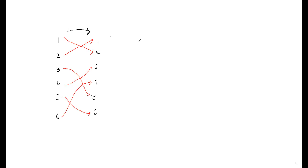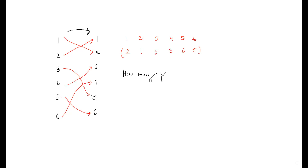You can observe that it's a permutation. Initially we had {1, 2, 3, 4, 5, 6}, and the output permutation is: 1→2, 2→1, 3→5, 4→3, 5→6, 6→5. The question asks how many such permutations are there such that f(f(i)) ≠ i.